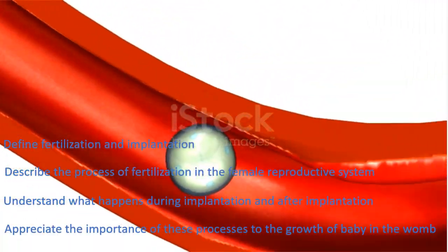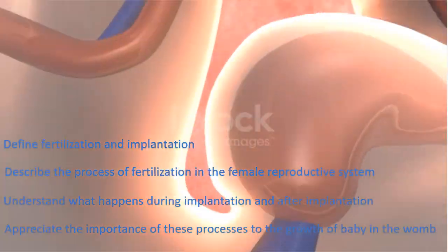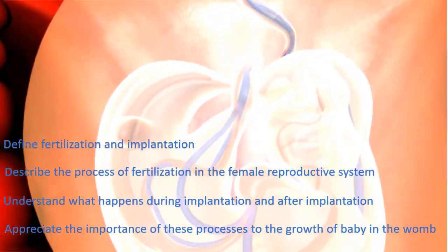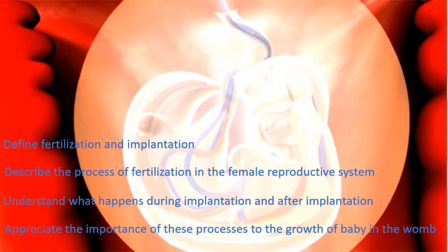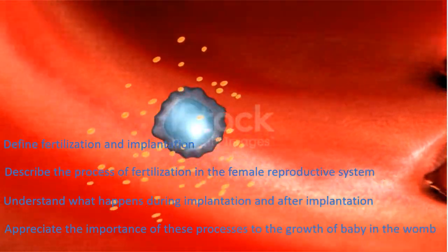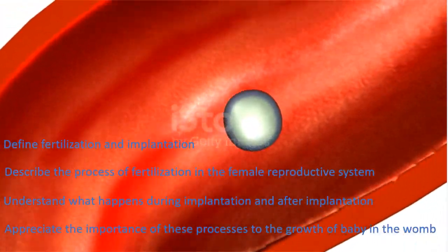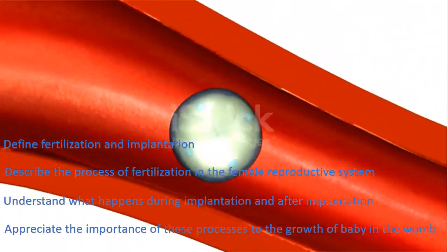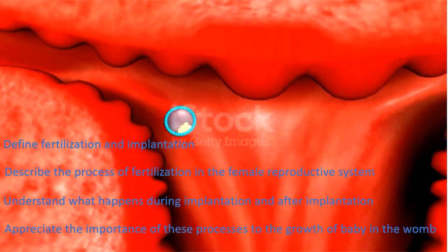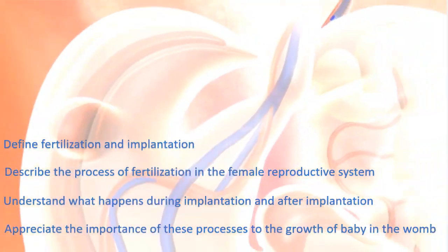In our previous lesson, we learned about the menstrual cycle. We said that menstruation occurs when fertilization has not taken place — that means the unfertilized egg, together with the thick walls of the uterus lining, are shed off through the vagina as blood.